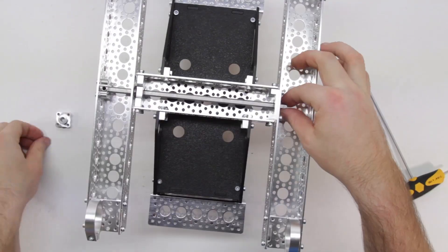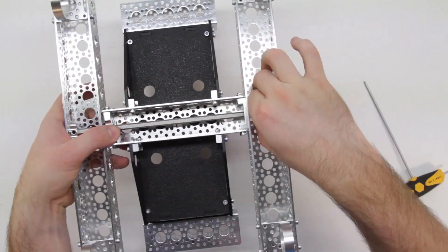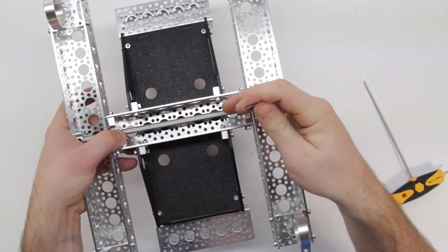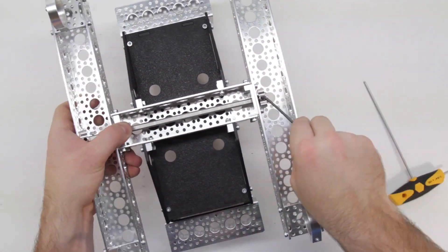Once you have the bearing in, re-tighten the screws, then slide the plastic spacer and the final set screw hub. Tighten this in place using your 3/32 hex key.